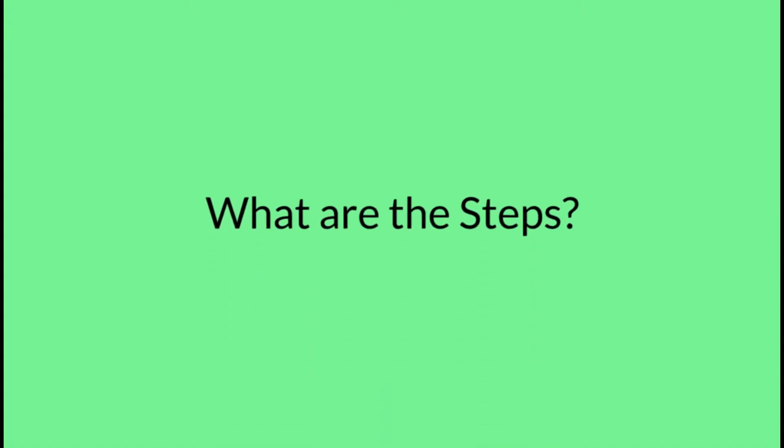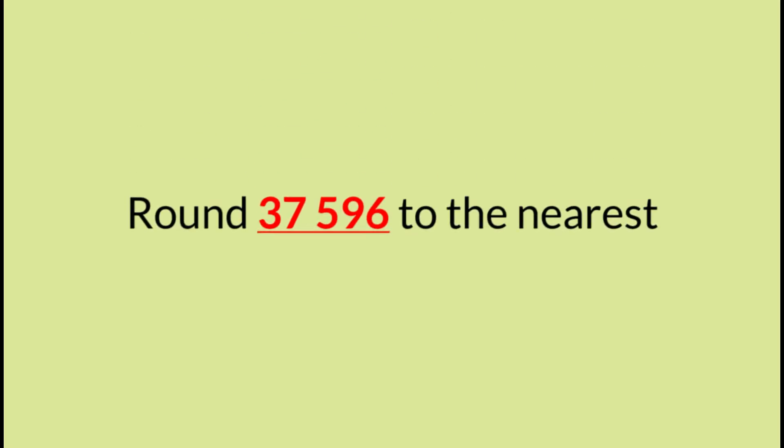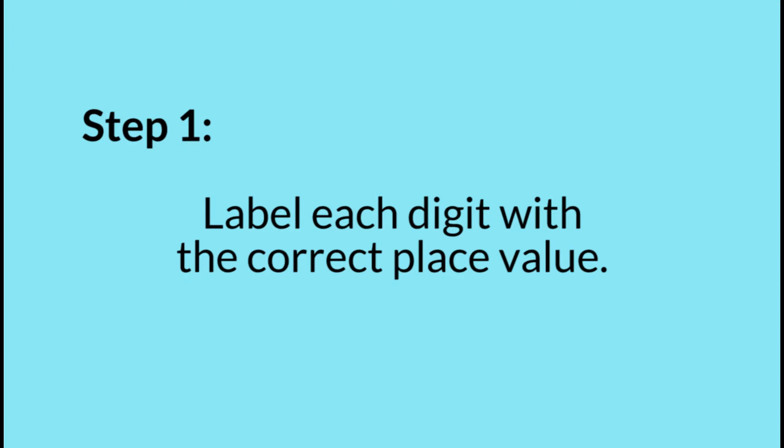Now, what are the steps to follow in rounding of numbers to the nearest ten thousands? Let's take a look at this example: Round 37,596 to the nearest ten thousands. Step 1: Label each digit with the correct place value.